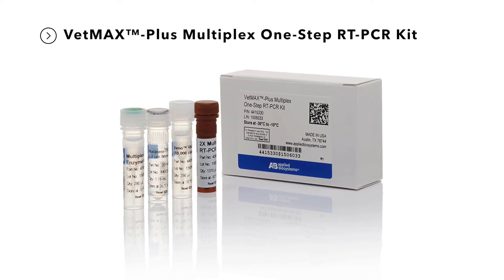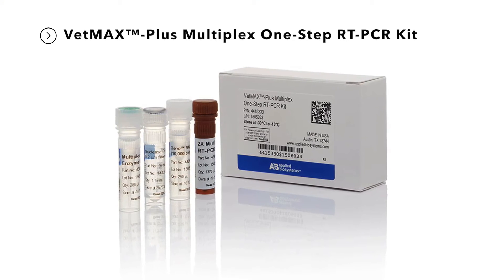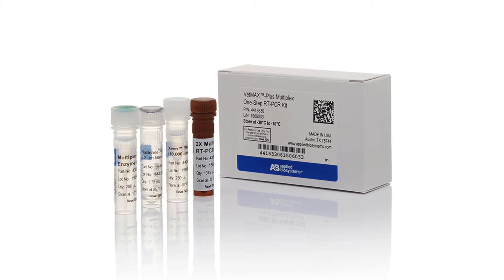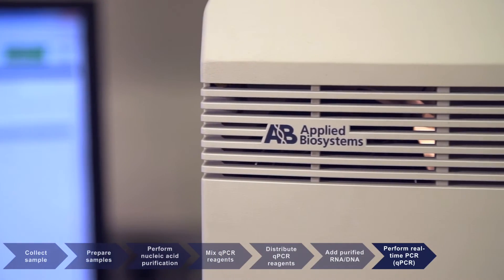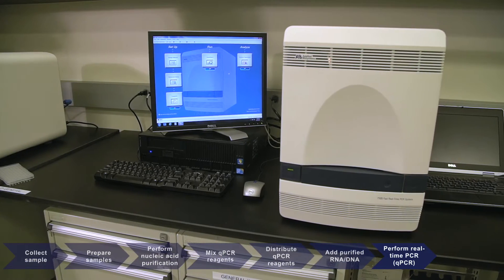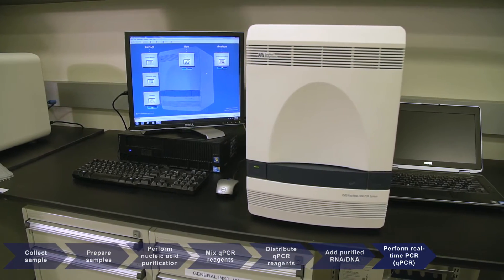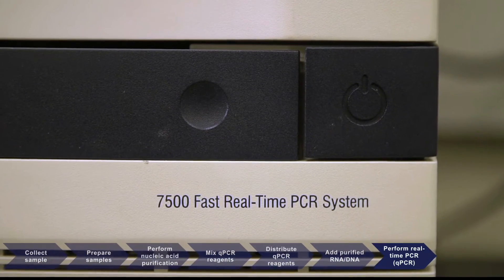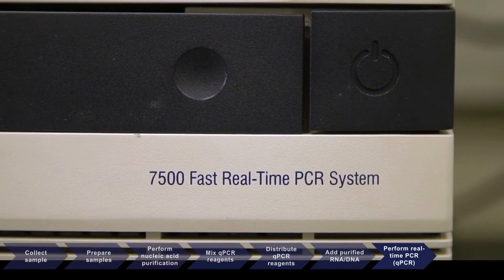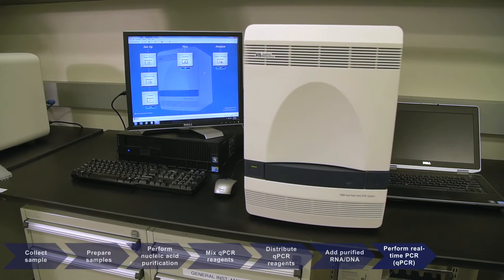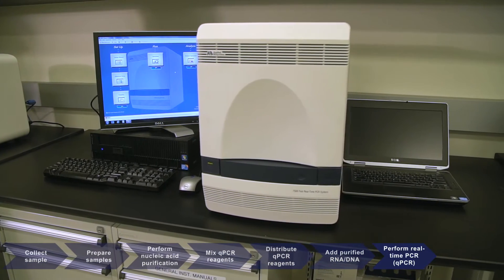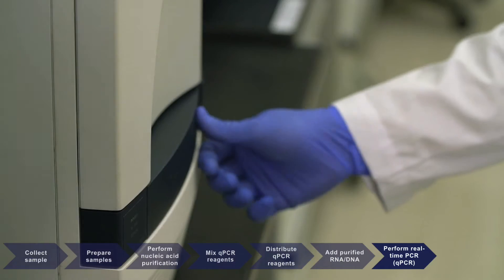Applied Biosystems reagents, assays, and kits have been validated on several PCR platforms, including the Applied Biosystems 7500 FAST real-time PCR system. The 7500 FAST is a versatile real-time PCR system for detection and quantification of nucleic acids in a standard 96-well format.